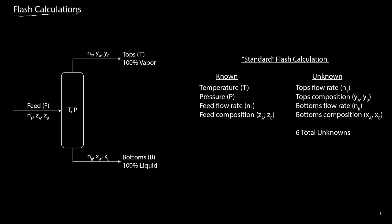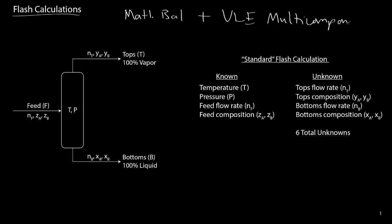In this lecture we will be discussing the flash calculation. A flash calculation consists of material balances plus vapor-liquid equilibrium for multi-component systems. We have a feed with a known flow rate and known composition. Here I've drawn the flash separator as a two-component system. In the standard flash calculation we are given the temperature and pressure at which the separation is to occur, and the unknowns are the total flow rate and composition of the vapor stream, also called the top stream.